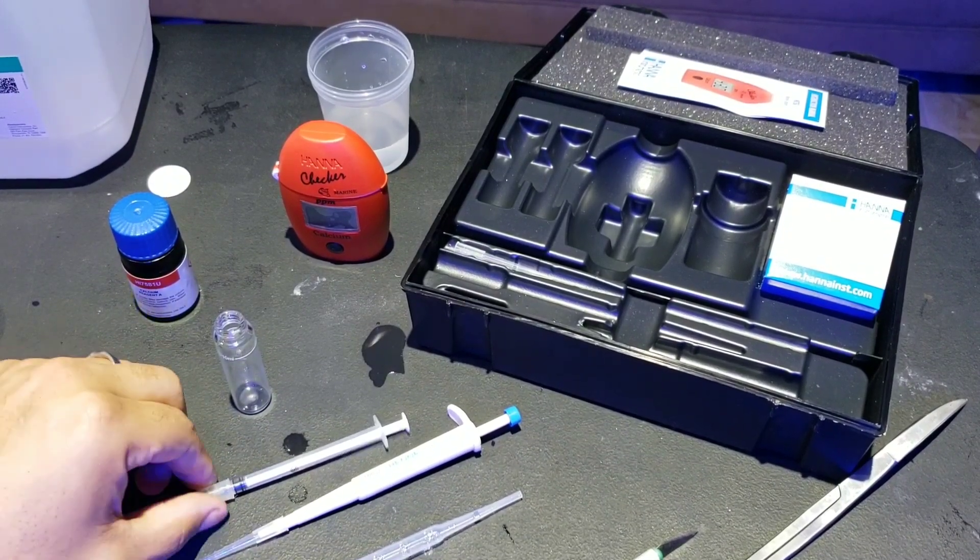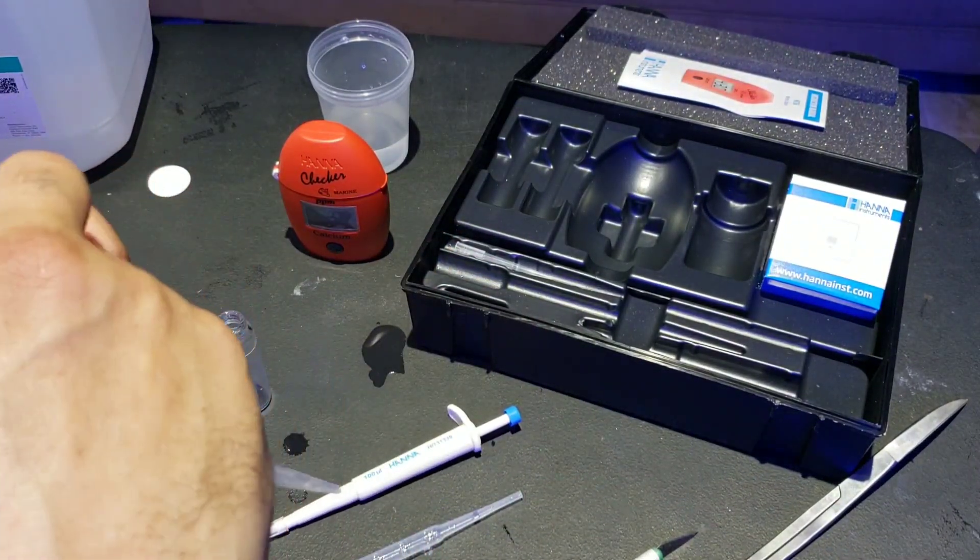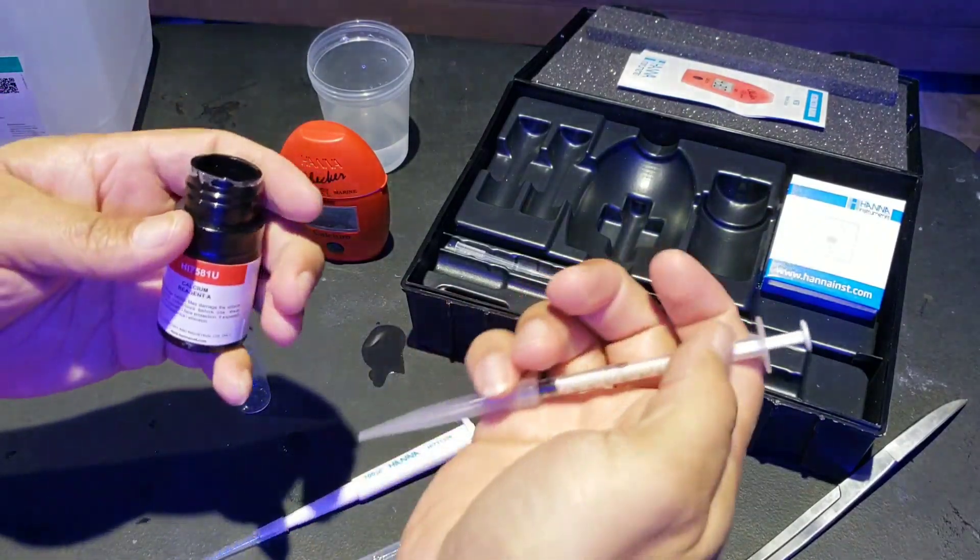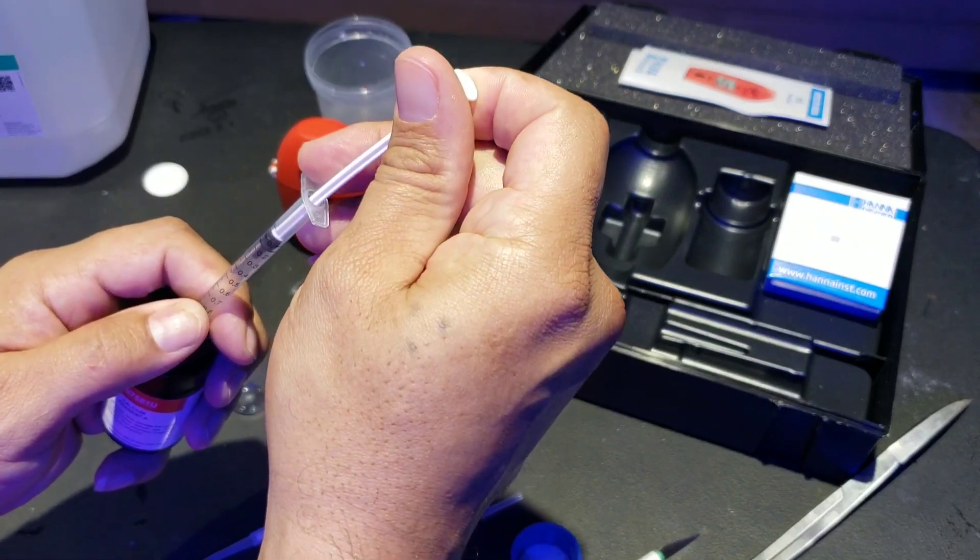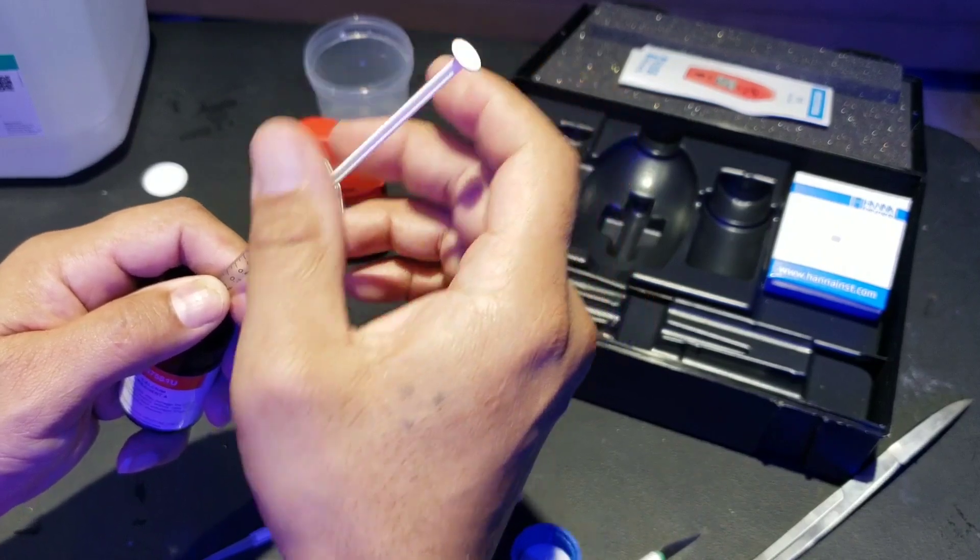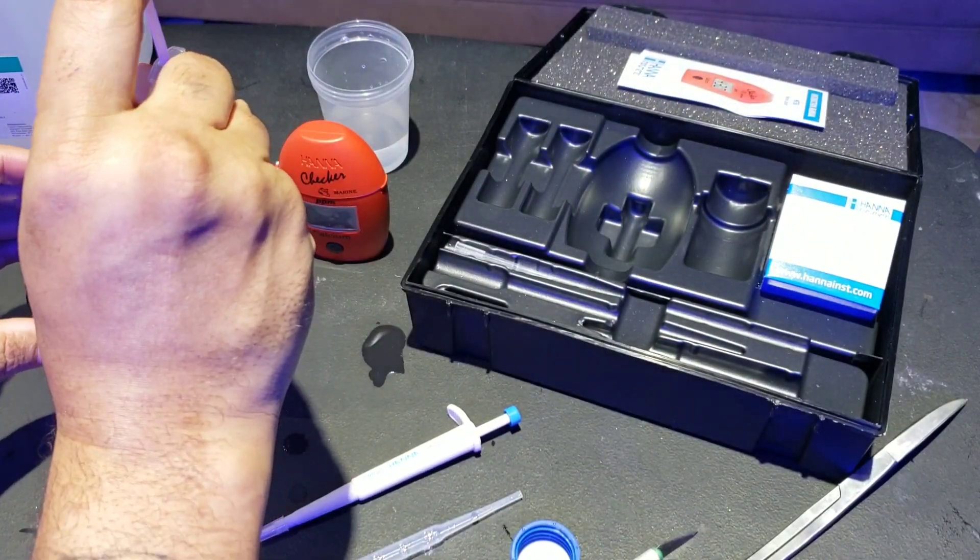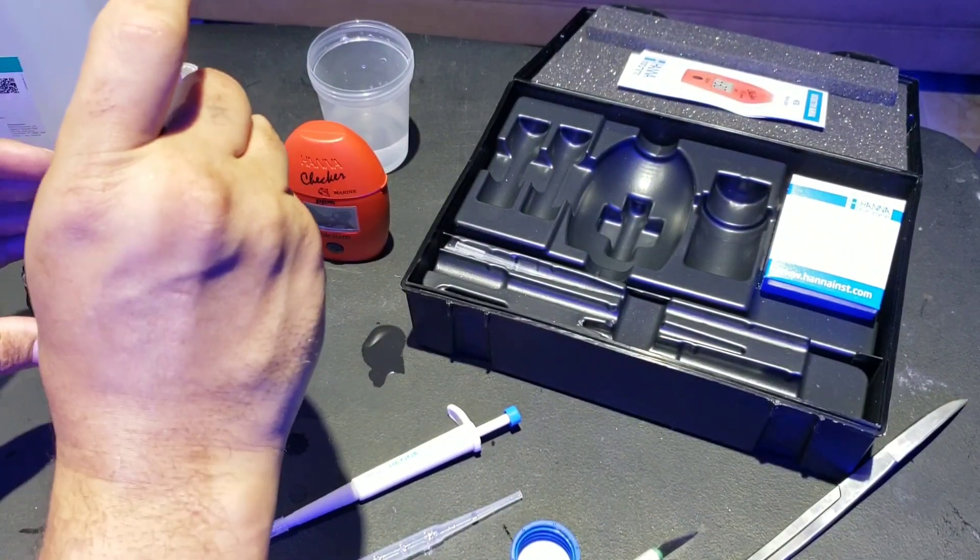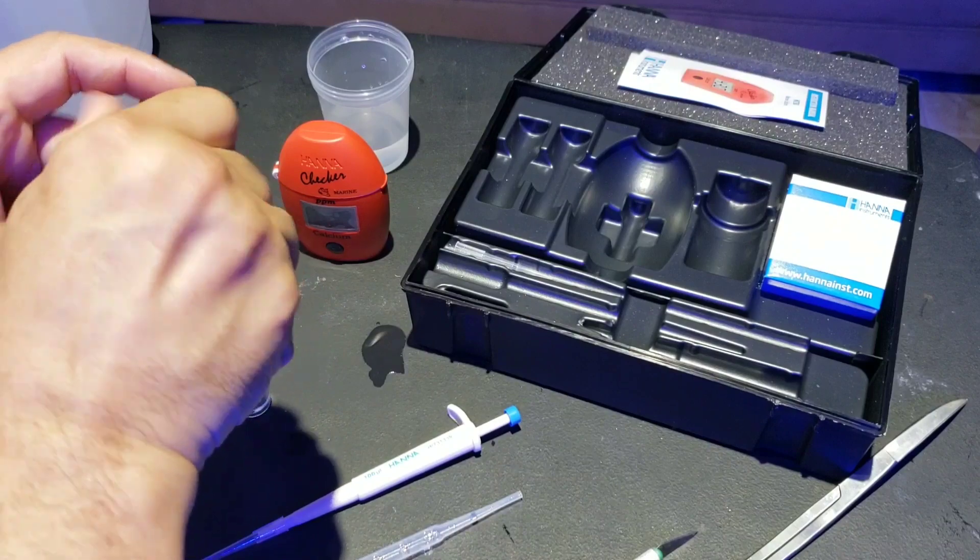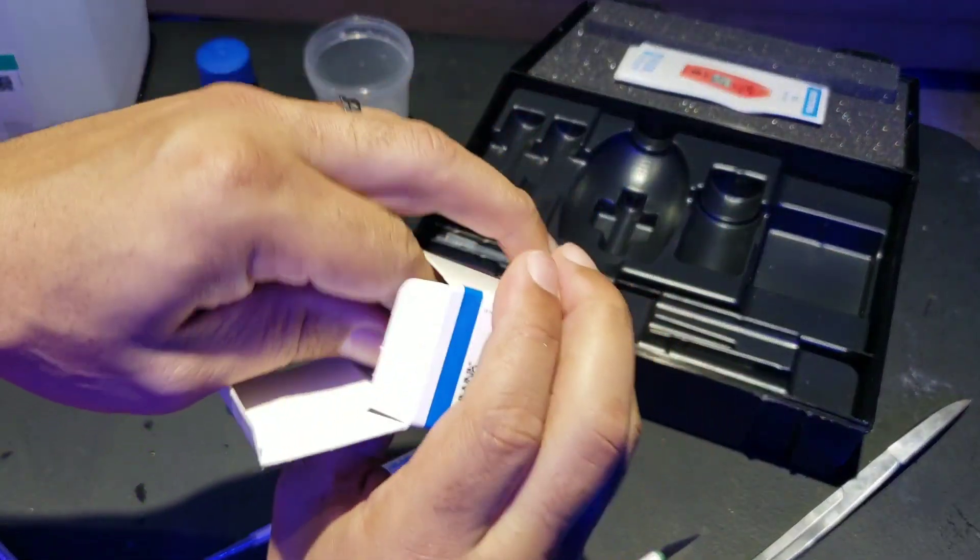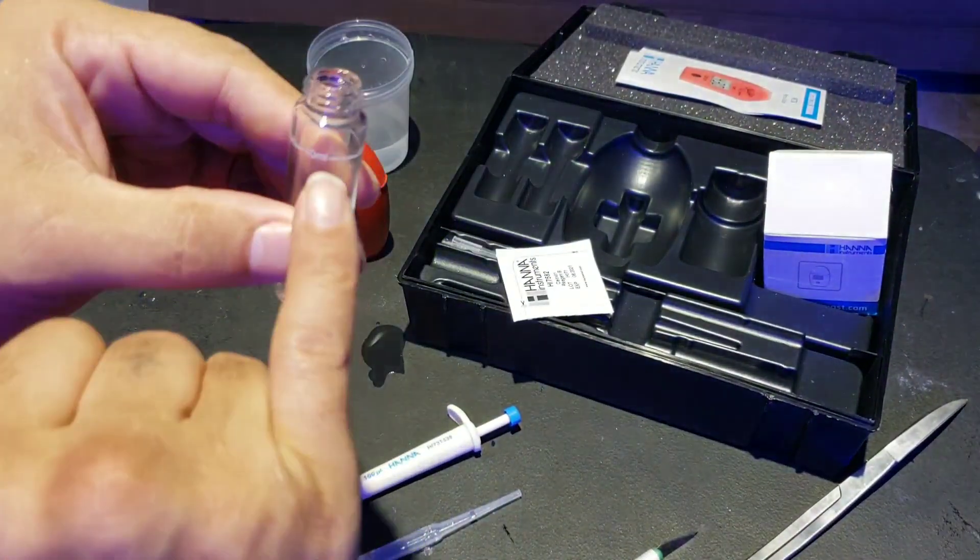What we're going to do is take our one mil syringe here and grab exactly one mil of reagent A. So we're going to take our reagent A, we're going to stick our syringe in here, grab exactly one mil. Get our bottom mark syringe to the one mil mark. We're going to add this into the cuvette. Now, after we do that, tighten this up. We do need to grab one of these.